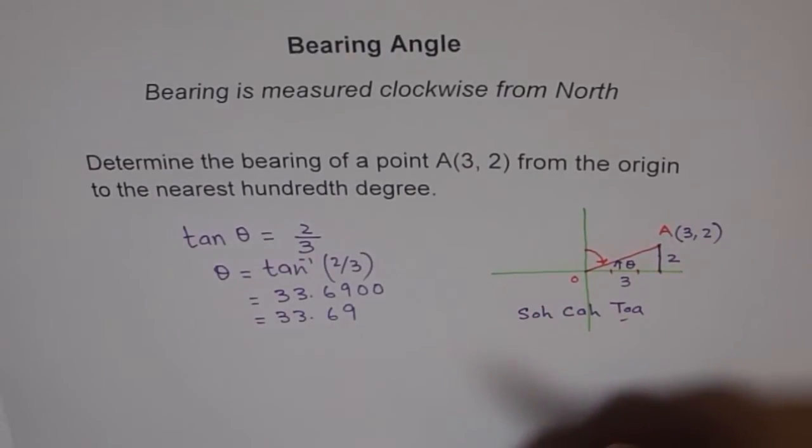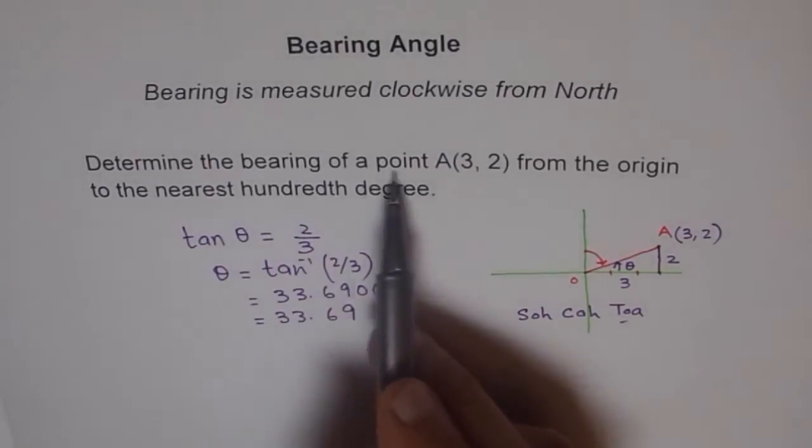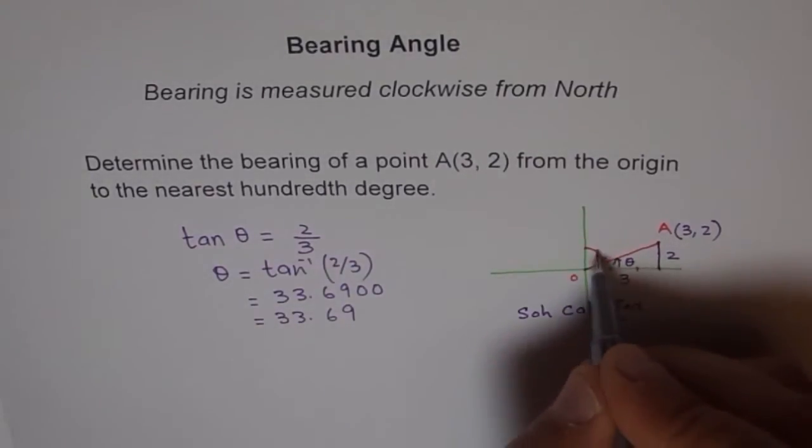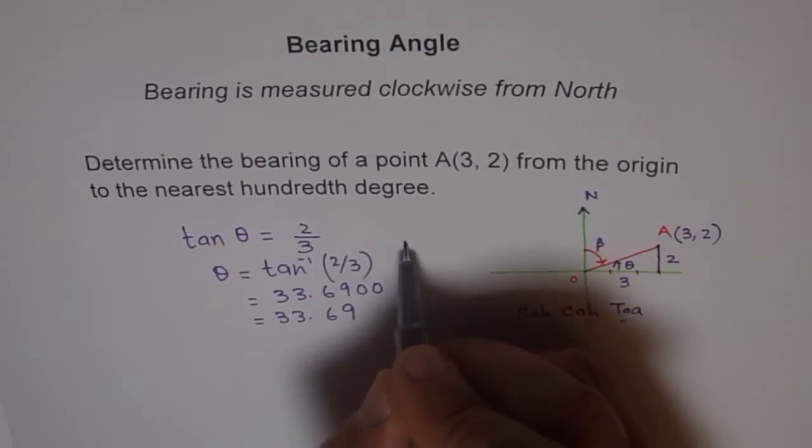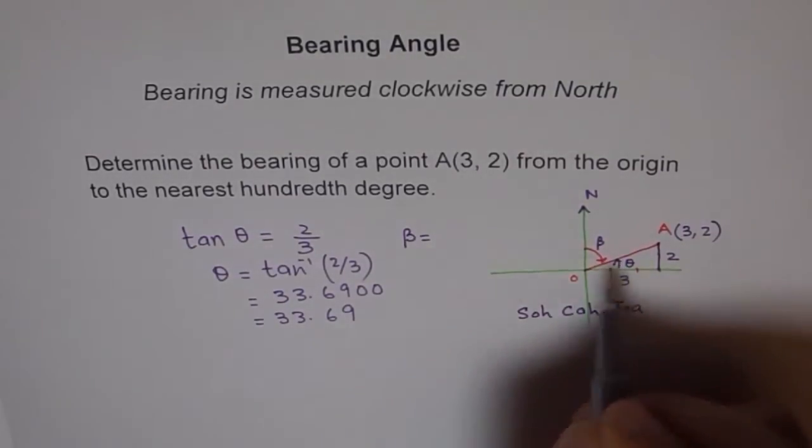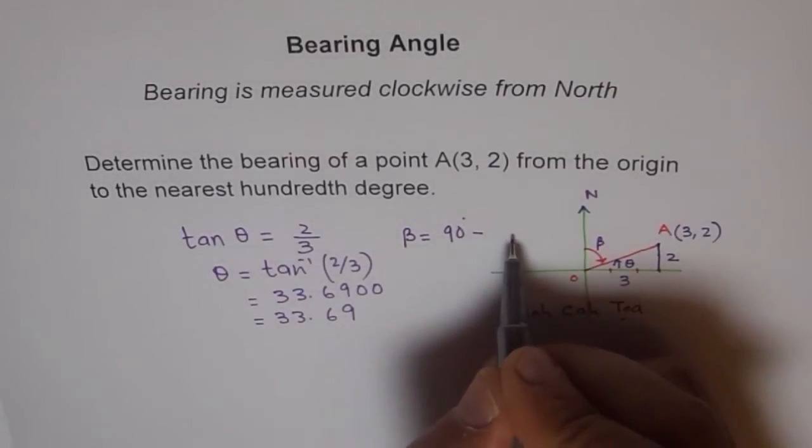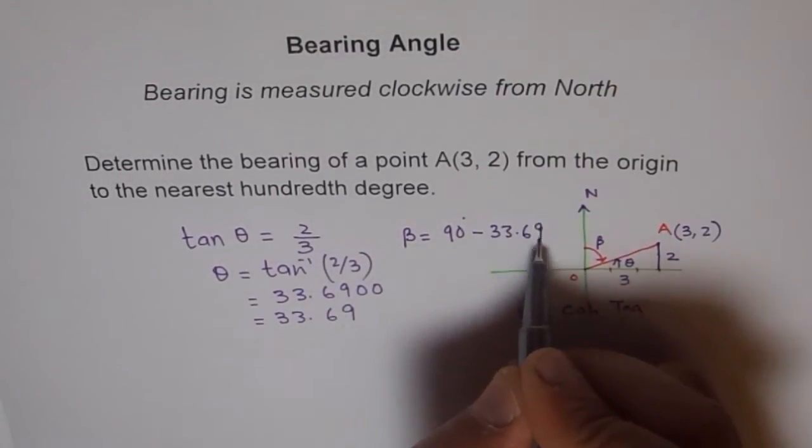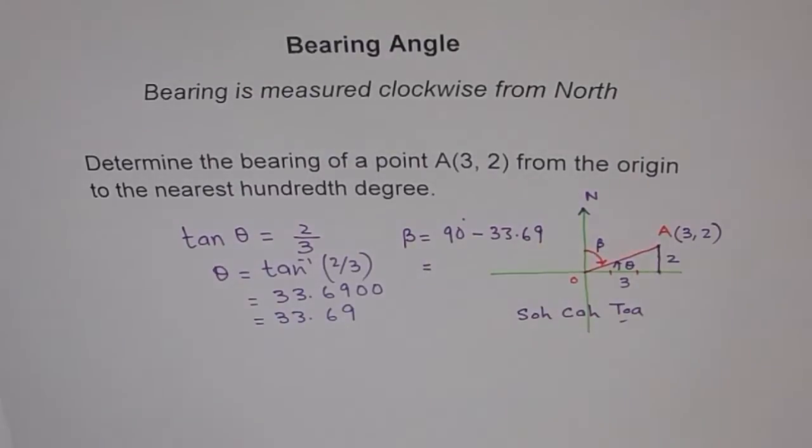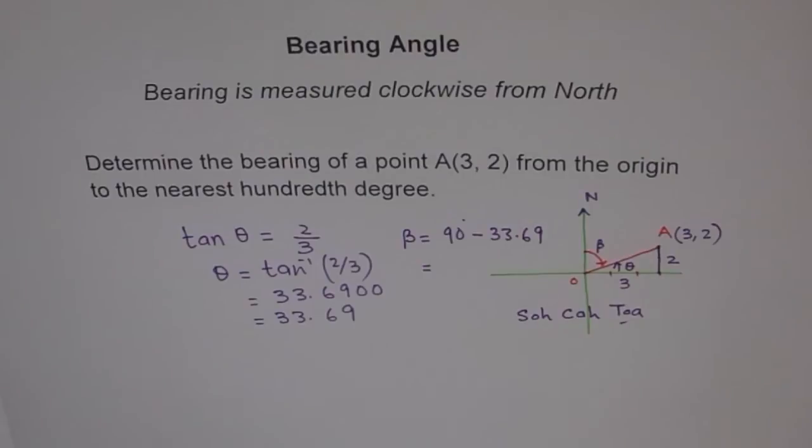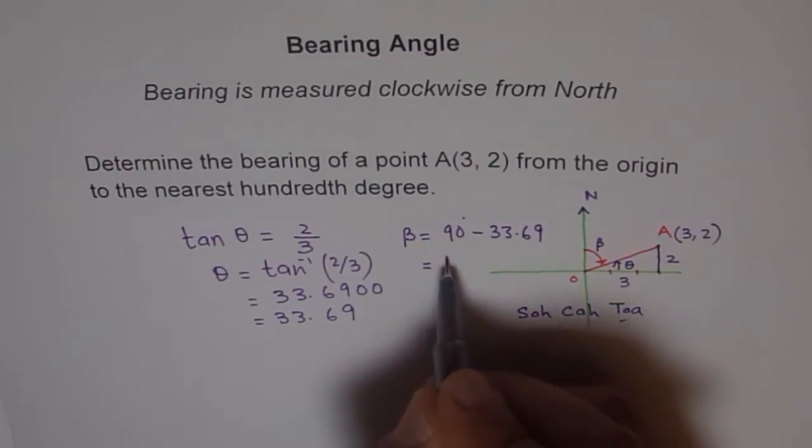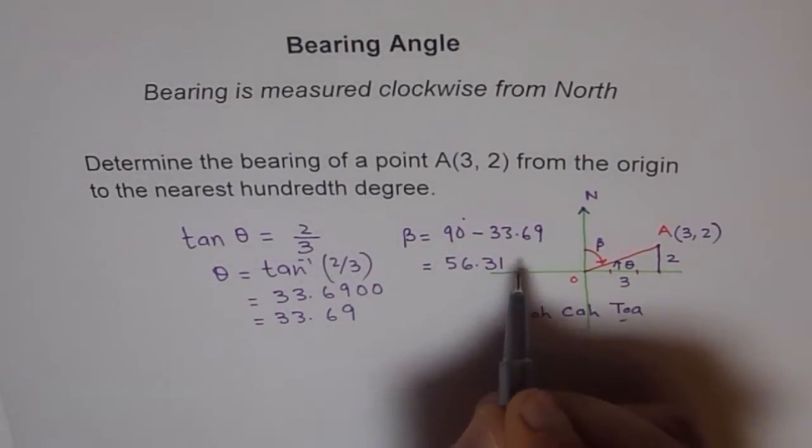Now, the question really is to find the bearing of point A. So bearing is actually, let's say angle beta for bearing. This is from here, from north. How much is this bearing angle? So bearing angle is equal to 90 minus theta. It's 90 degrees minus 33.69. So we get 90 take away 33.69, and you get 56.31 degrees.